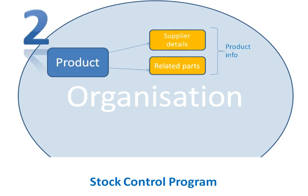Number two, a stock control program can keep details related to the product — related to the item, but not actual details on the item itself. For instance, supplier details — where you got the actual item from — will be kept, but that's not details about the item because that can change. These are related pieces of information, such as related parts or spare parts that go into that item, which might be detailed with it as well.